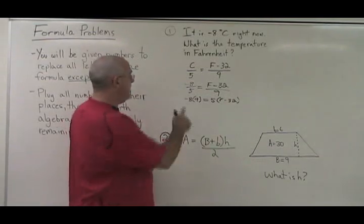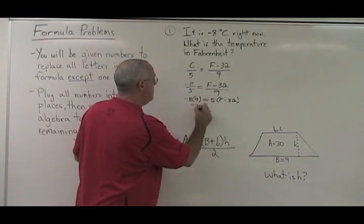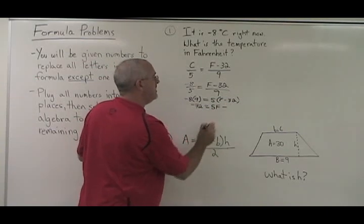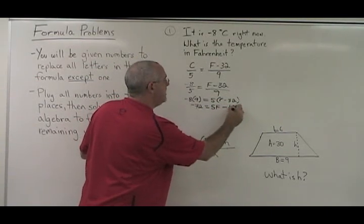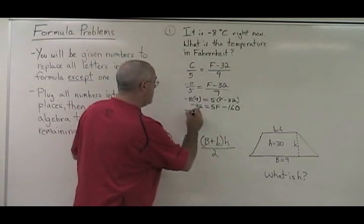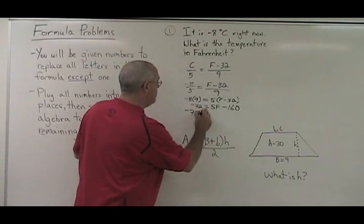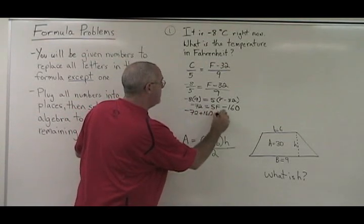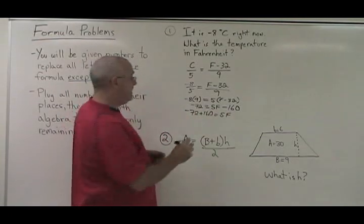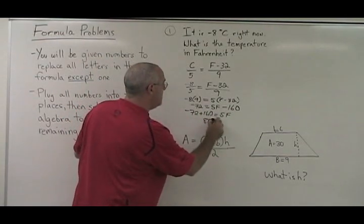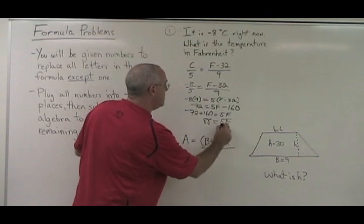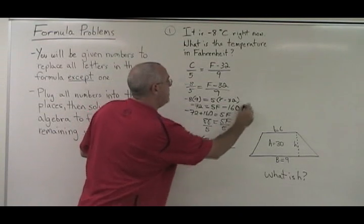Now we simplify. Negative 8 times 9 is negative 72. 5 times F is 5F. 5 times negative 32 is minus 160. Let's move the 160 to the other side. Negative 72 plus 160 equals 5F. Negative 72 plus 160 is equal to 88, so 88 equals 5F.